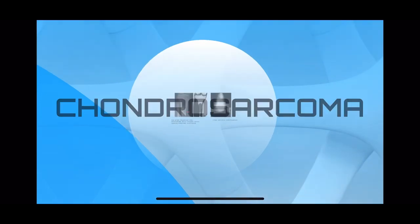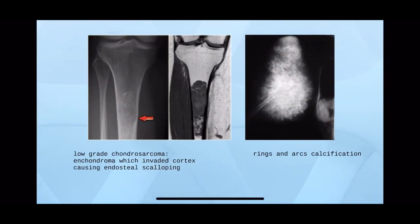Chondrosarcoma can be primary or secondary — secondary arising from osteochondromas or enchondromas. The first picture is chondrosarcoma arising from enchondroma. Enchondroma in the medulla shows popcorn calcifications, but if you see the cortex has been invaded — endosteal scalloping of the cortex — this denotes that chondrosarcoma has replaced the enchondroma.